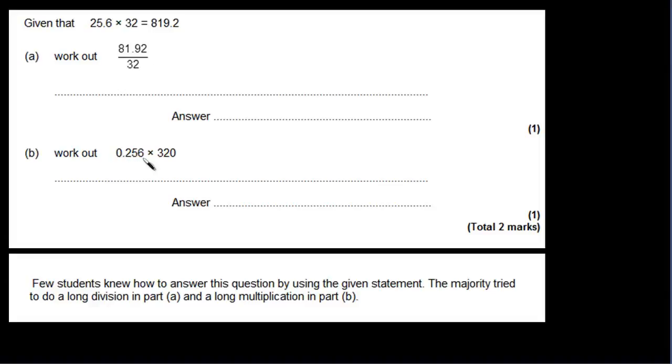And then here they again used the standard algorithm, the column method of long multiplication. It looks as though a lot of them made some mistakes there. The mistake that people would generally make here is they will not understand what to do with the decimal point, so they'll have their answer ten times or a hundred times bigger or smaller than what it should be. With only one mark, they're not going to get any marks at all unless they get the correct answer.